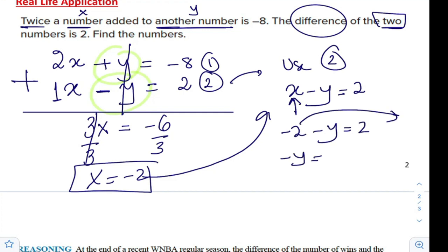So minus y is 2, minus 2 goes there, it will be 4. Reversing the signs or dividing by negative 1, we have now this is the first number and this is the second number.